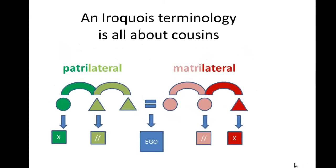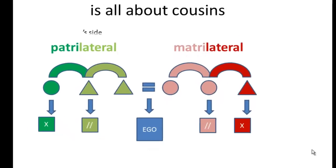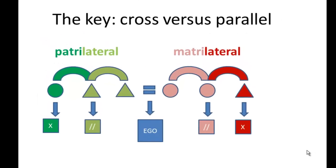The key to an Iroquois Kin Terminology are the distinctions among cousins. We have four kinds of cousins: cousins on the father's side that we call patrilateral cousins, and cousins on the mother's side that we call matrilateral cousins. We can further distinguish between cross- and parallel cousins, and this distinction is critical to understanding an Iroquois Kin Terminology.